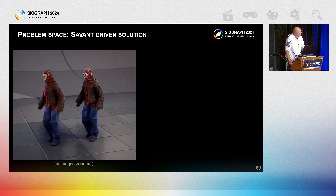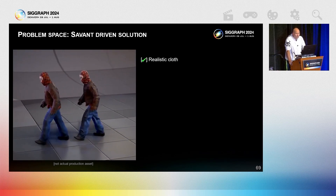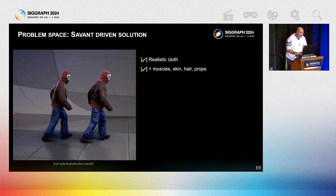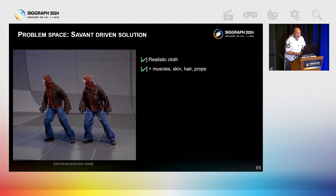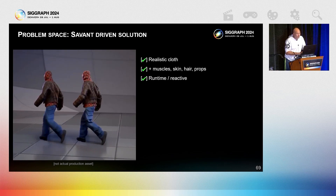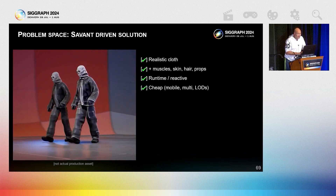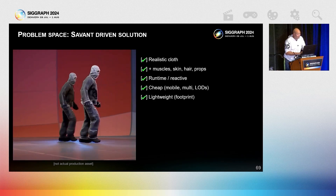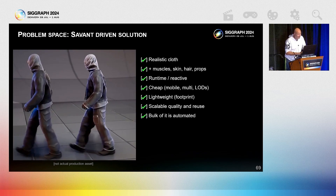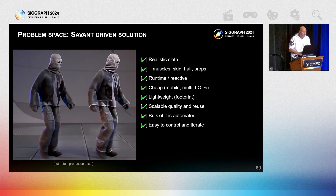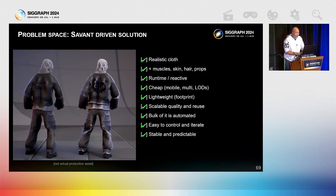To recap: Savant realism comes from Houdini, Marvelous Designer, or 4D capture for cloth, muscles, hair, props, tentacles, layers, materials, wide sleeves, sliding, and sticking. It reacts to forces and objects. Thanks to rubber footprint, it's as cheap as we want in both cycles and megabytes. We get full combinatory power for character constructor. It takes the load on the scripting side but allows full control every step of the way. And finally, it is deterministic — so no nasty surprises.